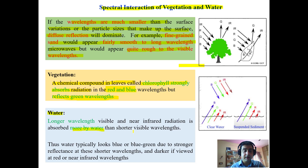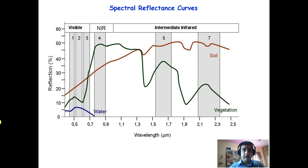For water, longer wavelength visible and near-infrared radiation is absorbed more than shorter wavelengths. This is why water typically appears blue or green, due to stronger reflectance at shorter wavelengths, and appears darker when viewed at red or near-infrared wavelengths.